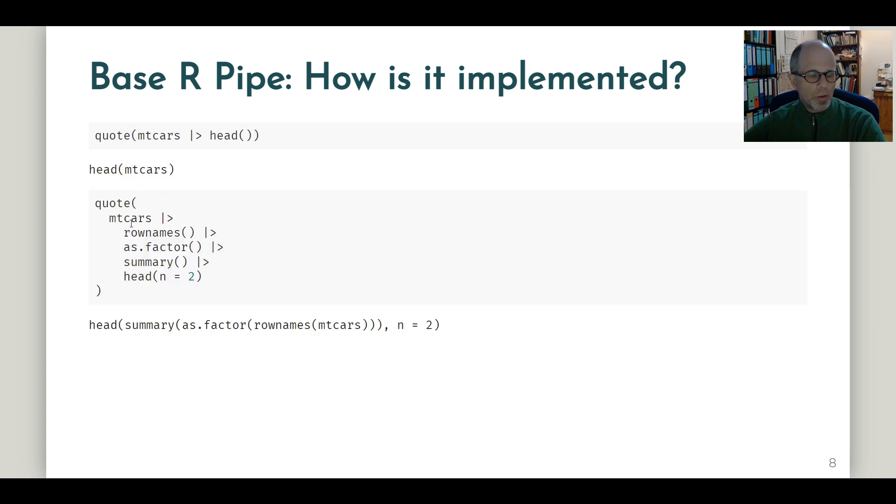We can also use the quote function and apply it to the longer pipe that we used on the previous slides. And you see what is internally captured and stored as an R expression is exactly the nested parentheses call that we talked about. So this could lead us to the assumption that there's very little overhead associated with the base R pipe because it is treated as exactly the same way as this notation that we see here at the bottom. This is not the case for the Magrittr pipe as it lives in an external package. It needs a function call to be evaluated.